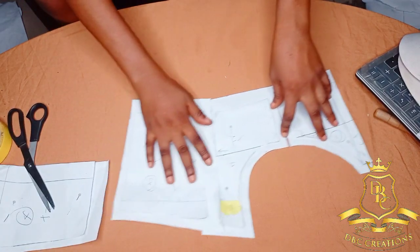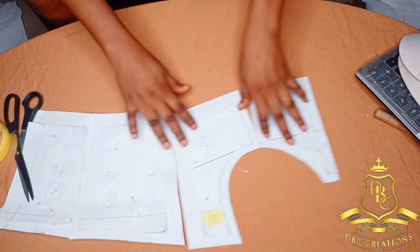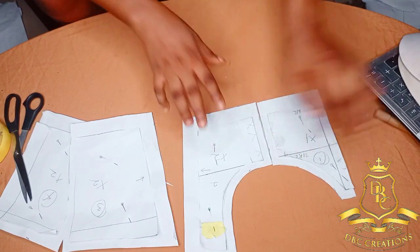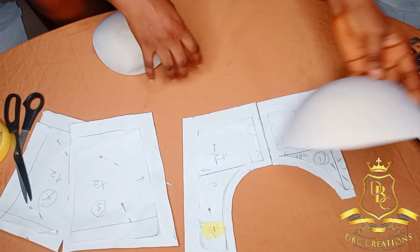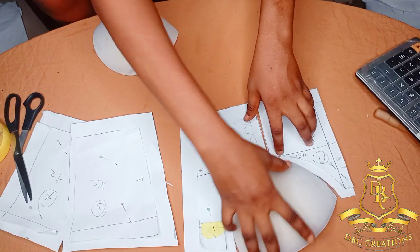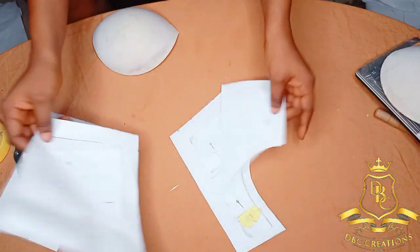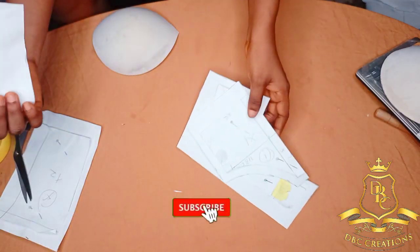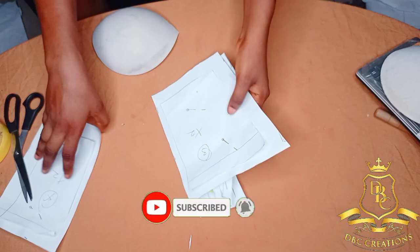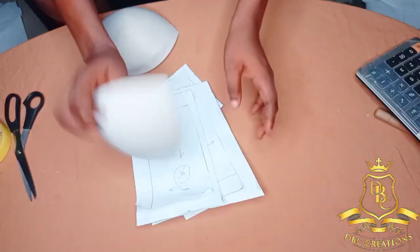My three and then my four. So everything is set. So I'm going to, I'm going to cut it out on the fabric, then sew, iron. We are going to sew it together then you will see the final result of this corset.